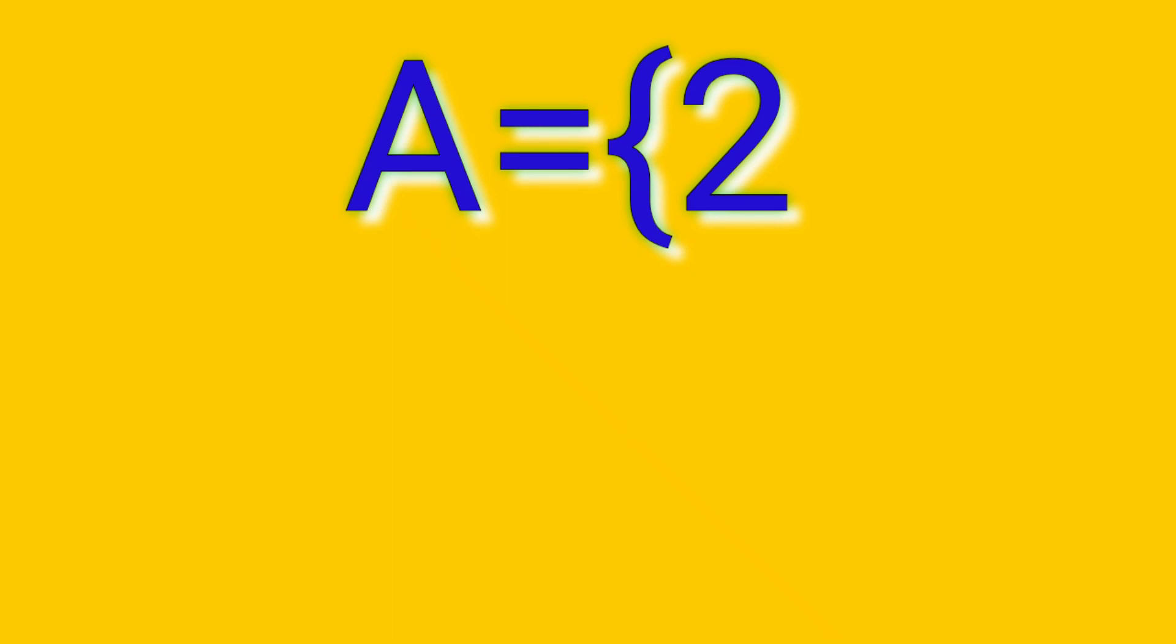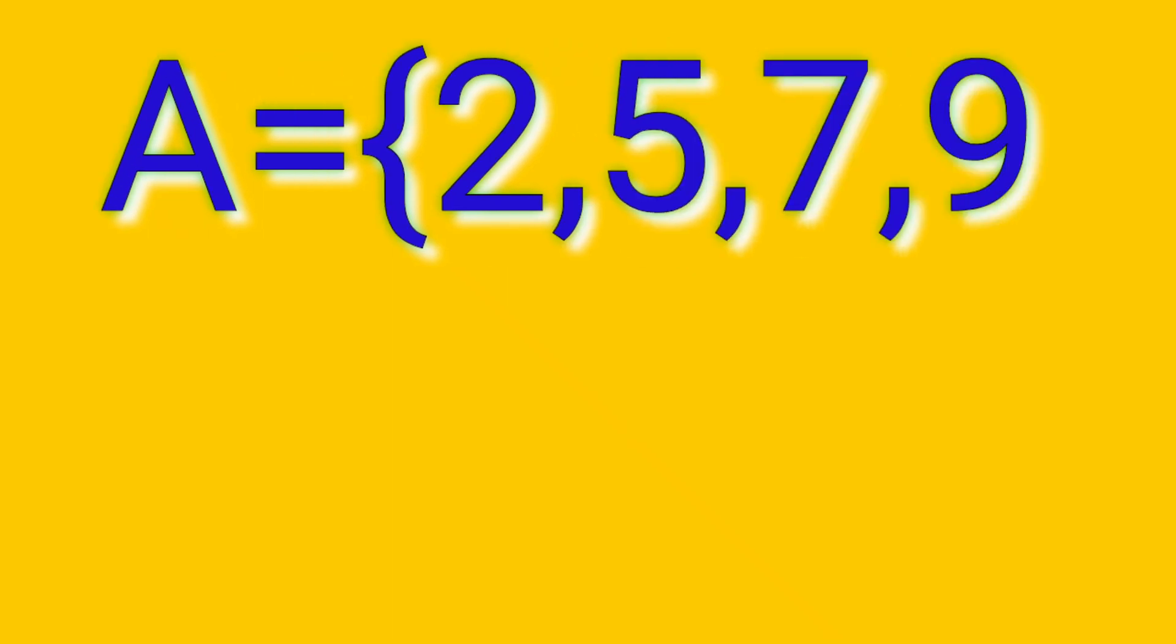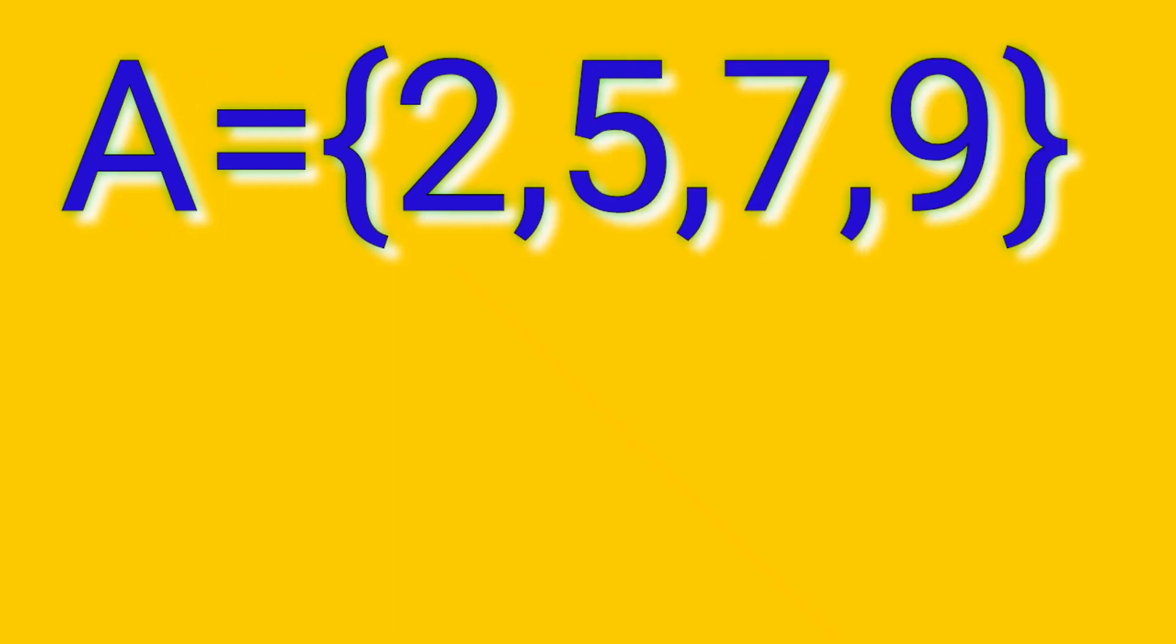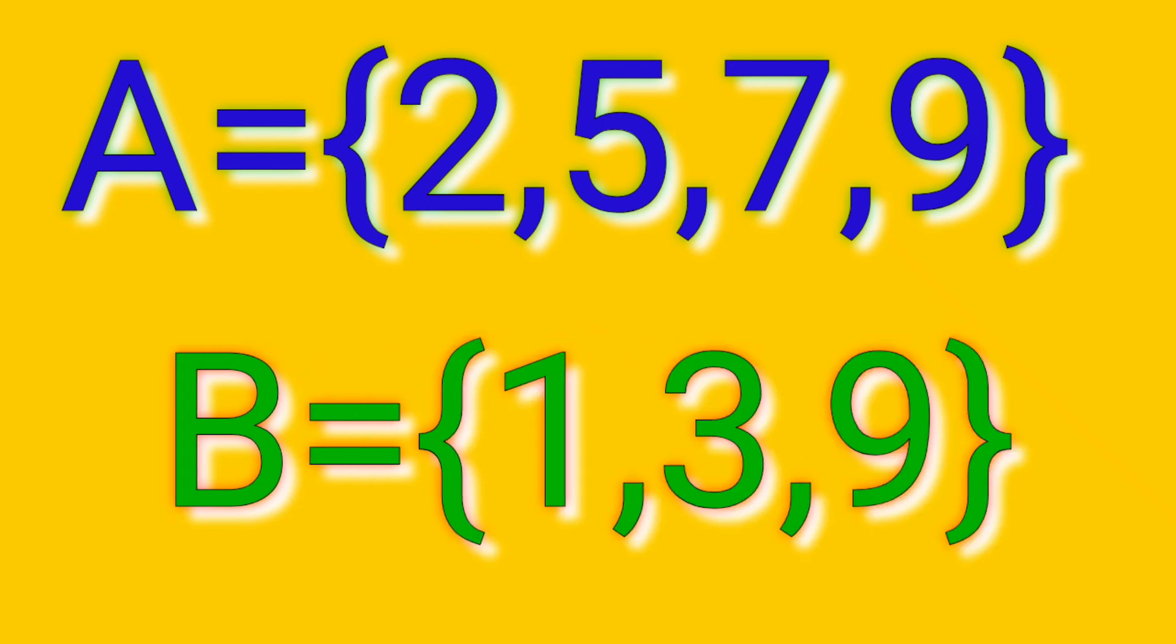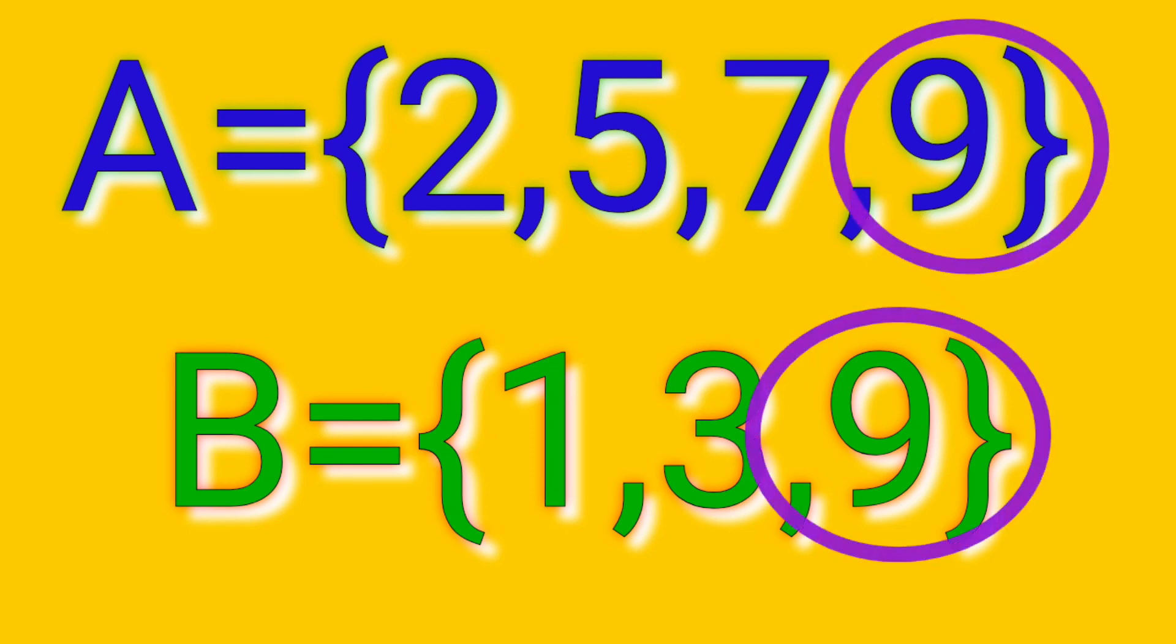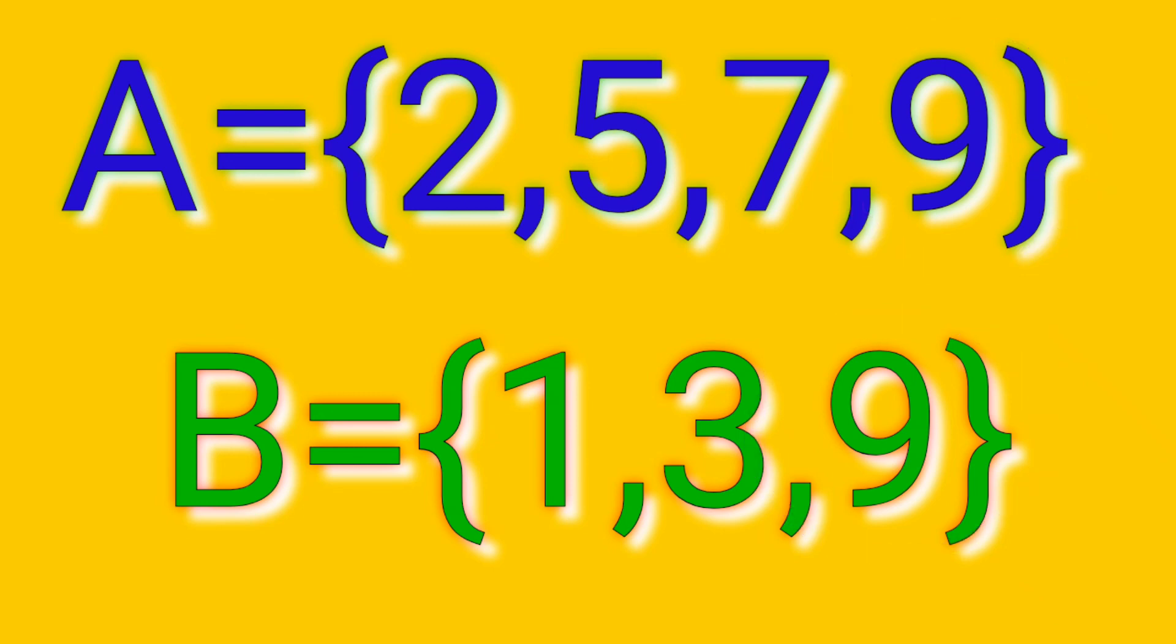Let's try another example. Ek set A hai hamare paas jiske element hai 2, 5, 7, 9. Or ek set B hai hamare paas jiske element hai 1, 3, 9. Toh in dono sets ke elements mein ab dekh sakte hain number 9 is common. That is why they are called overlapping set. I hope you will understand this topic.